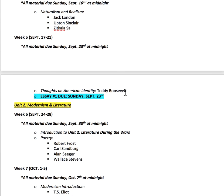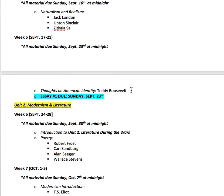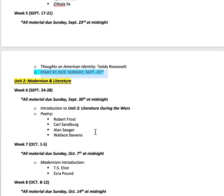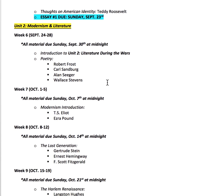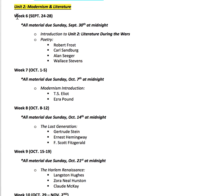Week five is when your first essay is due. You'll have a very short assignment at the beginning of the week with Teddy Roosevelt, and then you'll have the rest of the week to work on your essay, which is due on Sunday, September 23rd at midnight. Once that first unit is done, your second unit will open up and you'll again have access to everything in that unit at once.